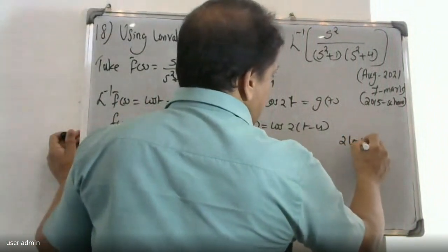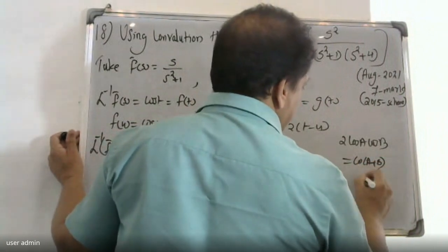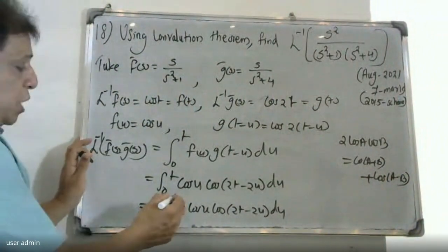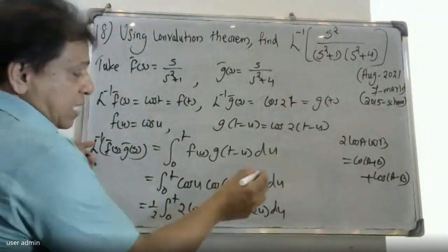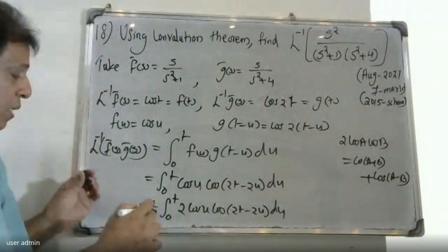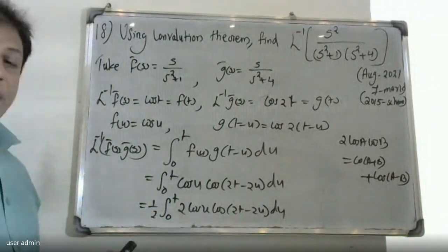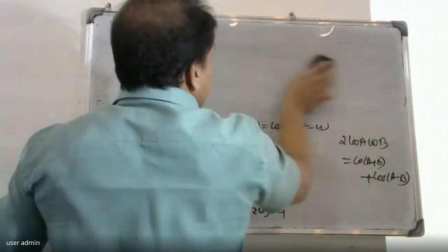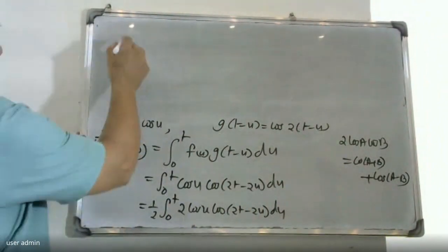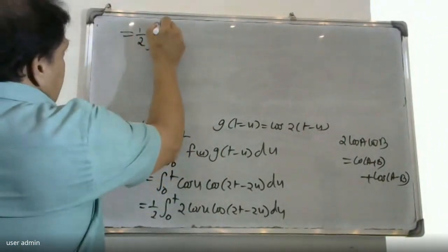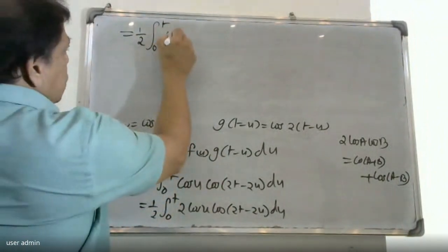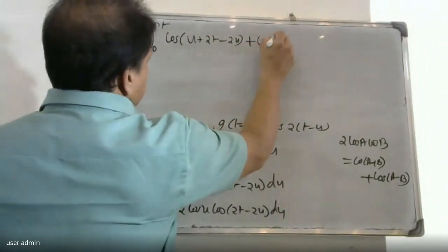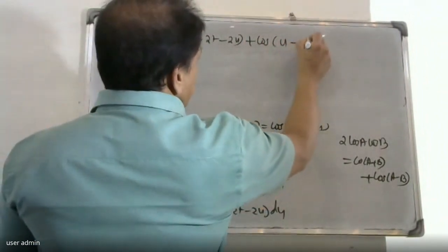We apply the product-to-sum formula: 2 cos A cos B equals cos(A plus B) plus cos(A minus B). So two cos(u) cos(2t minus 2u) equals cos(u plus 2t minus 2u) plus cos(u minus 2t plus 2u). The integral becomes one half times the integral from 0 to t of [cos(2t minus u) plus cos(3u minus 2t)] du.